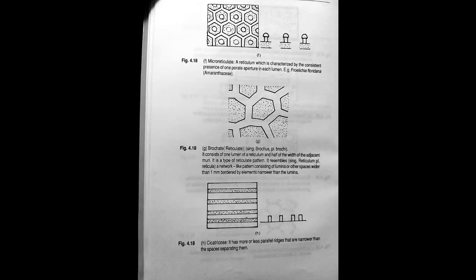Next we have microreticulate. Here a reticulum which is characterized by the consistent presence of one porate aperture in each lumen. This is very well found in Froelichia floridana of Amaranthaceae family.